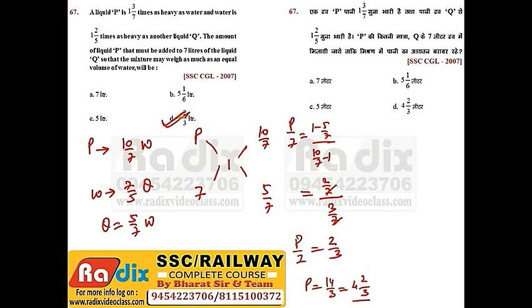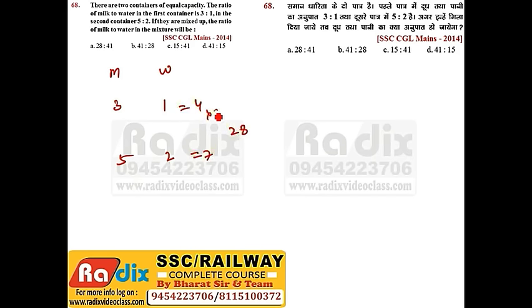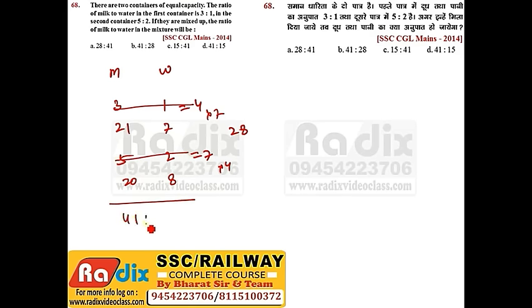Question 68. There are two containers of equal capacity. The ratio of milk to water in the first is 3:1 and in the second is 5:2. If they are mixed, find the ratio of milk to water. The sums are 4 and 7; LCM is 28. Multiply first by 7: milk = 21, water = 7. Multiply second by 4: milk = 20, water = 8. Adding: milk = 41, water = 15. Answer is option D.